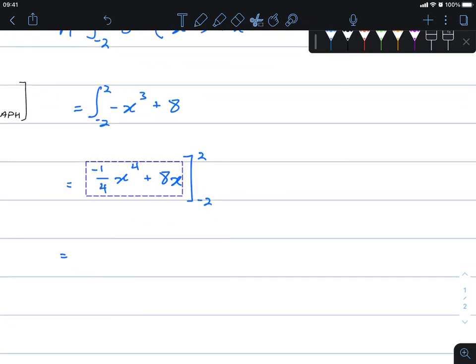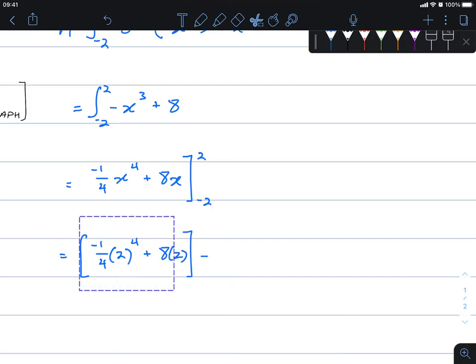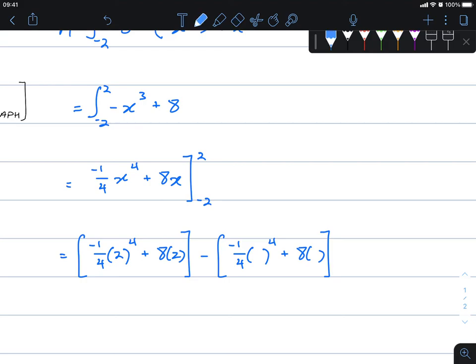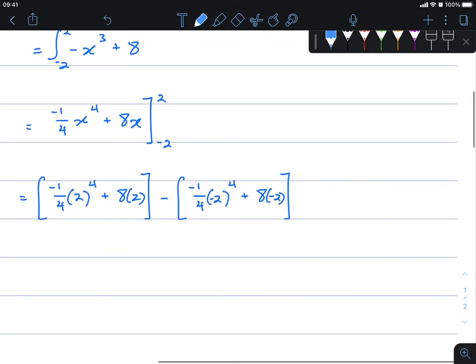Now it's just a matter of taking all the values and substituting it into x. So 2 goes first, minus the exact same thing, this time with negative 2. Nice and straightforward. Straight into the calculator. Let's take a look at what we get. Negative 1 quarter times 2 to the power of 4 plus 8 times 2.